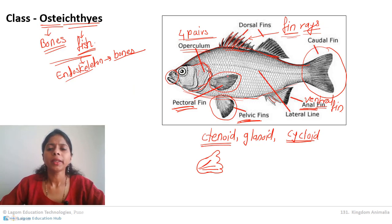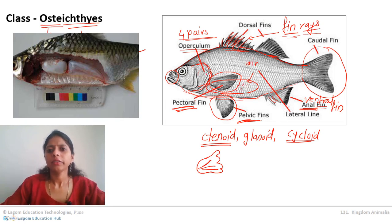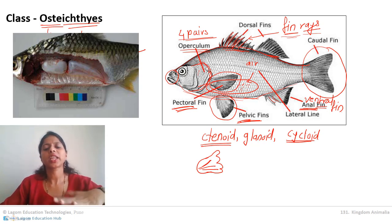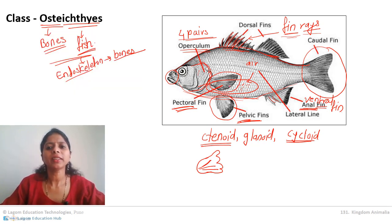These fish are also provided with a swim bladder, also called air bladder. It is a bag-like structure inside the body where fish store air. This stored air helps the fish float in water without sinking, so the fish can float even without active swimming — something that sharks and Chondrichthyes cannot do.